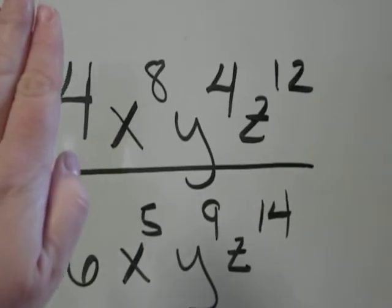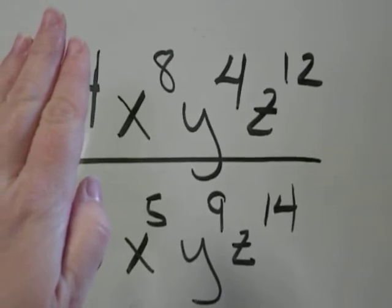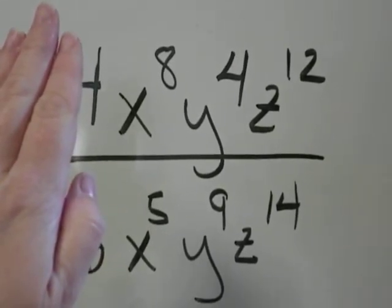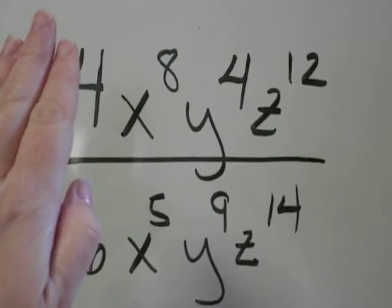Now, ignore the coefficients. Just look at the variables. X's are lined up. Y's are lined up. Z's are lined up. So it's 8 minus 5, 4 minus 9, and 12 minus 14.